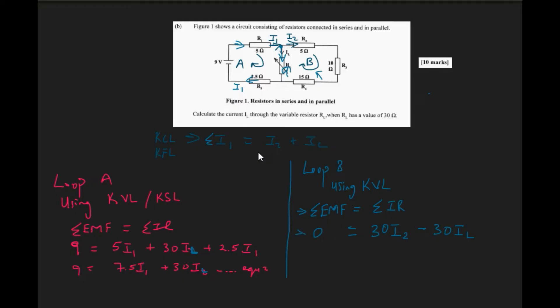As a result of that, this is what our third equation looks like, equation three. Mind you, when you look at Loop B there is no battery or cell in it, so therefore the sum of the EMF is actually equal to zero.